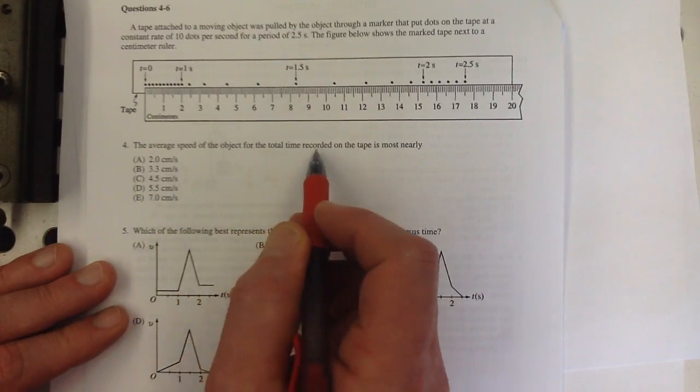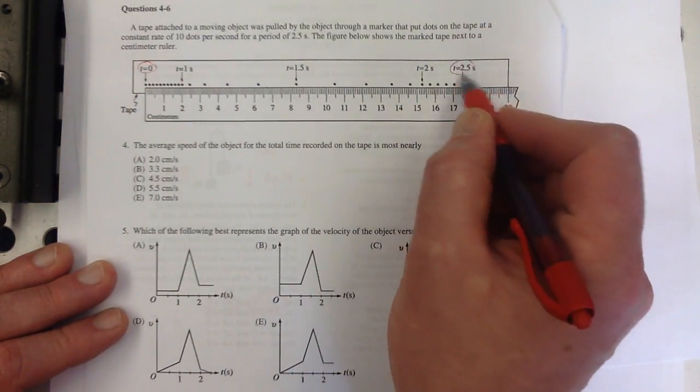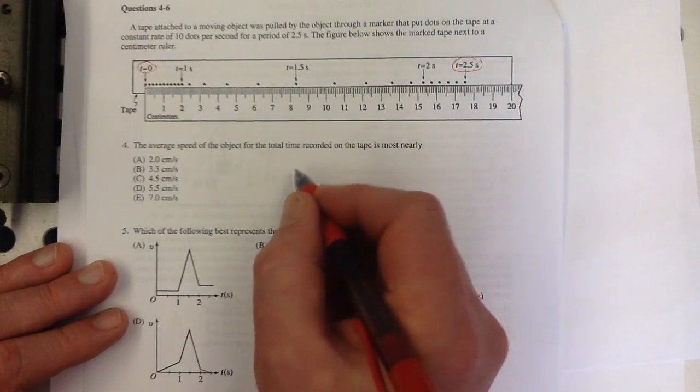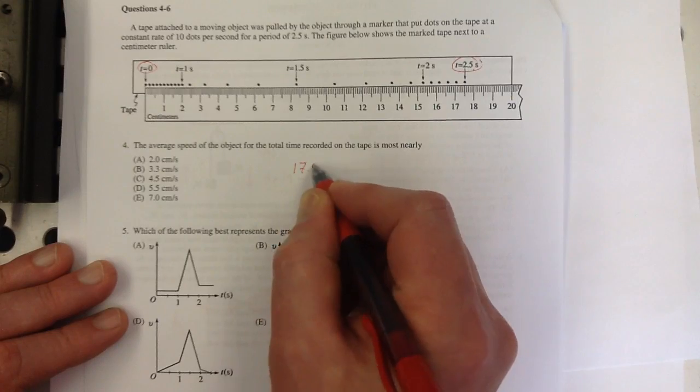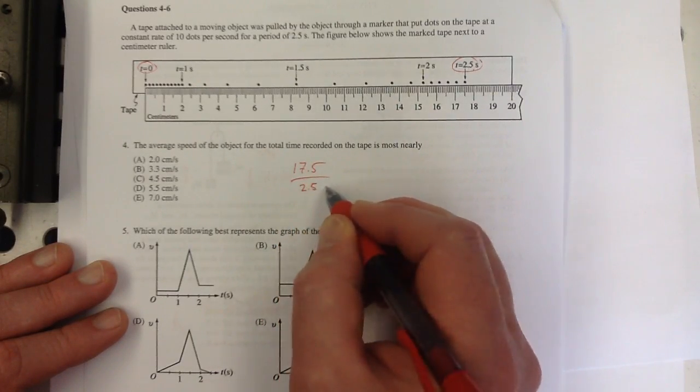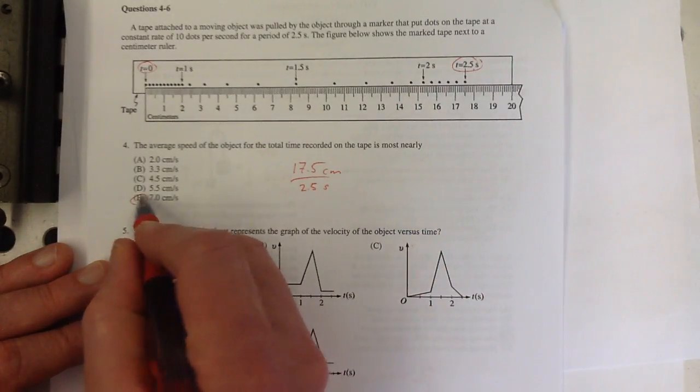The average speed of the object for the total time—well, it's the average speed. It goes from time zero, in 2.5 seconds it goes 17 and a half centimeters. So 17.5 centimeters divided by 2.5 seconds. And that goes in there seven times. So it's about seven.